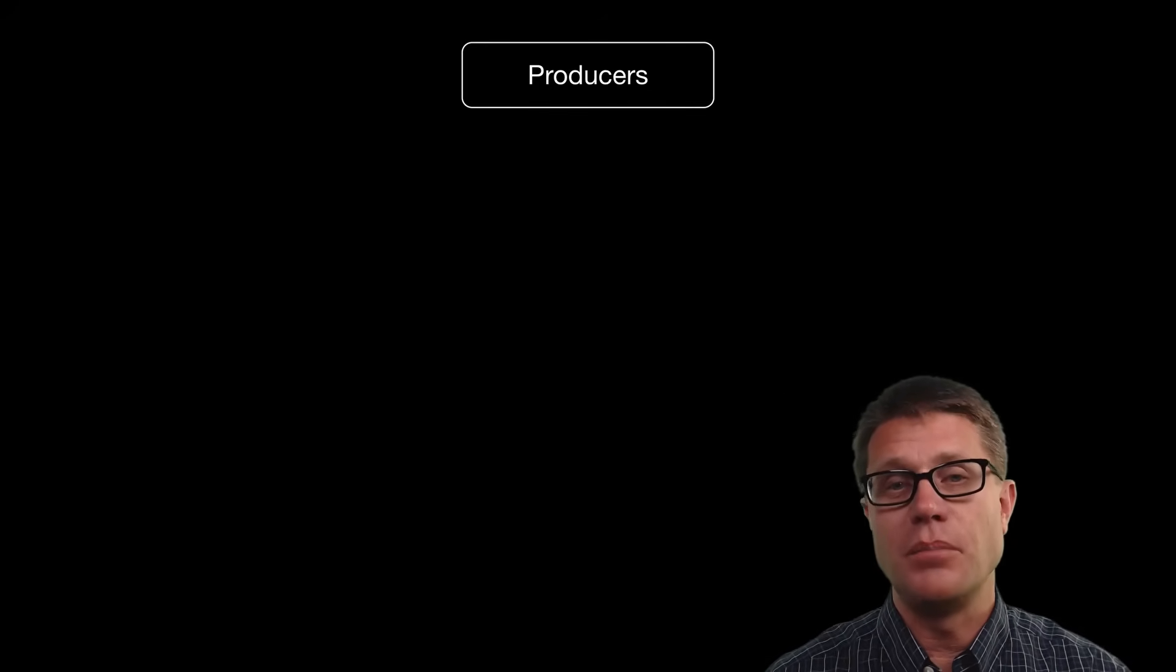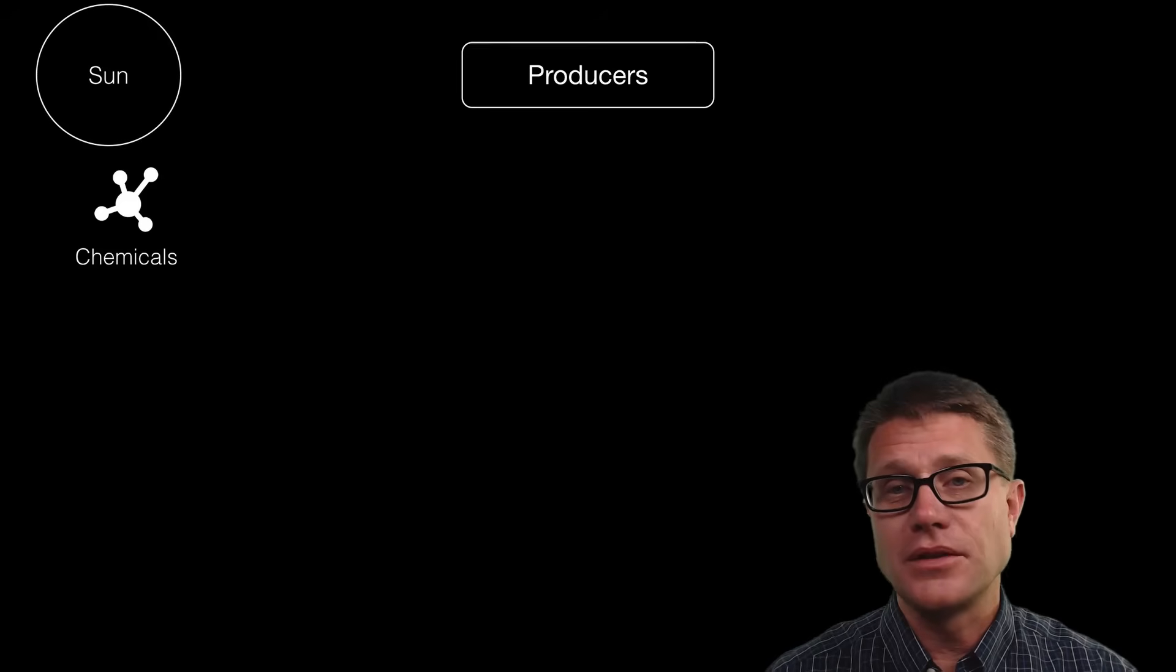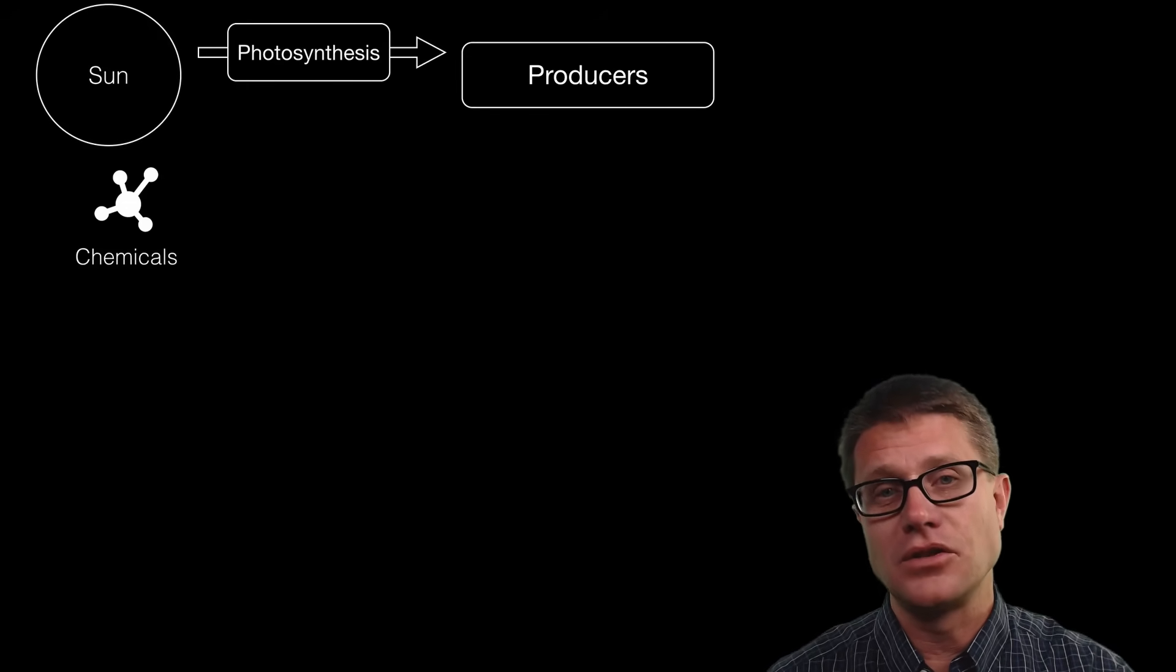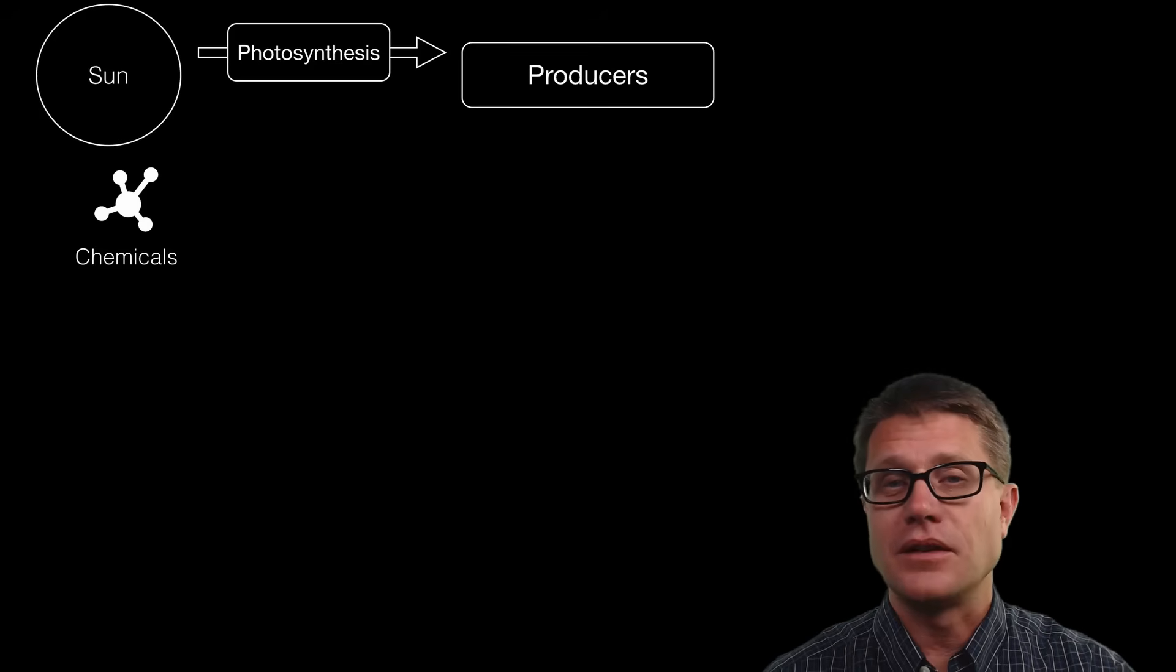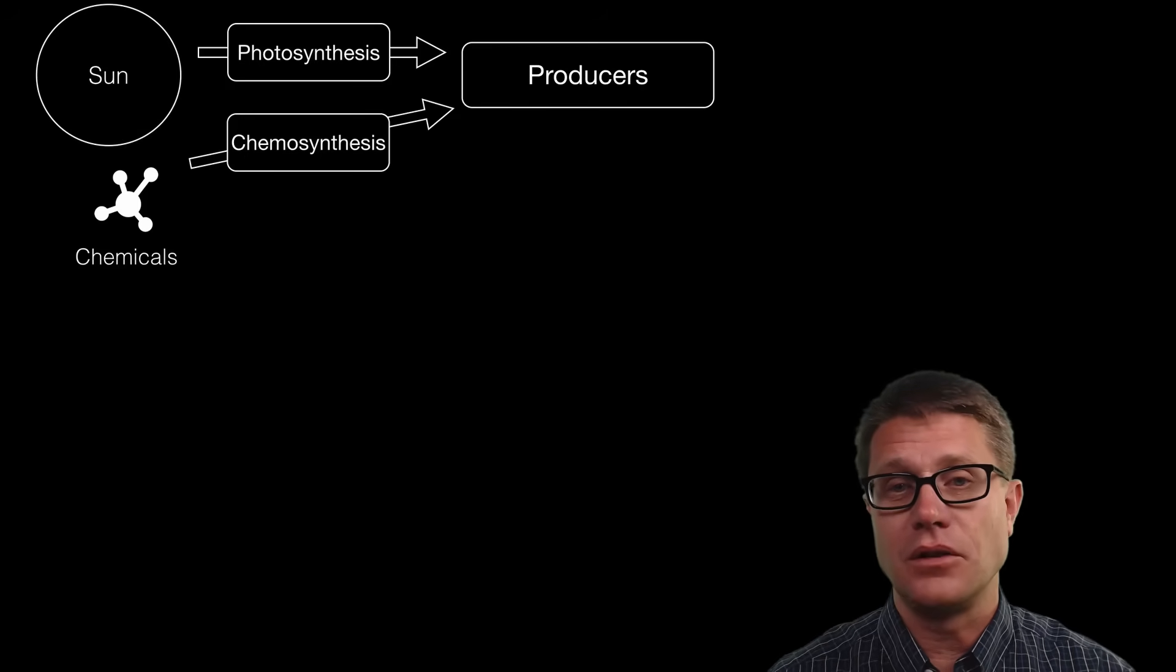And so the producers on our planet produce food, make energy usable. Where did that energy originally come from? It came from either the sun or chemicals. And so all plants do photosynthesis and so they are taking energy from the sun and putting it into the energy of the bonds of the food. Now some chemosynthetic bacteria can do the same thing with chemicals like hydrogen sulfide. They are making that energy usable.